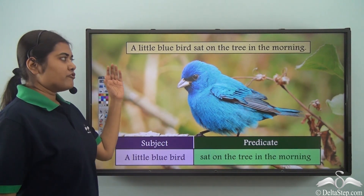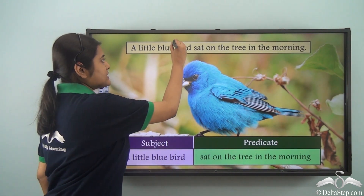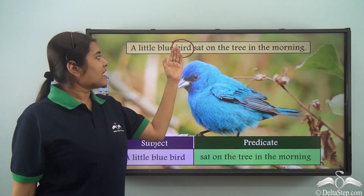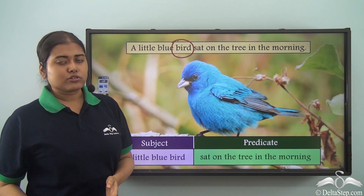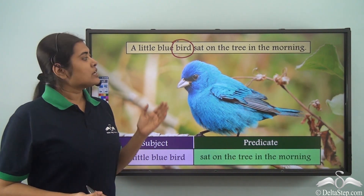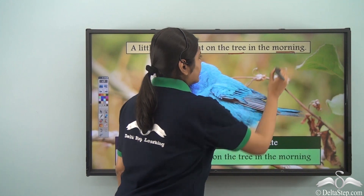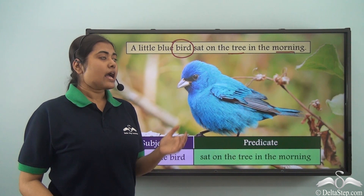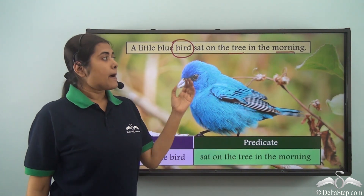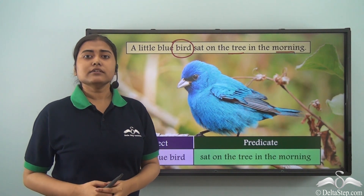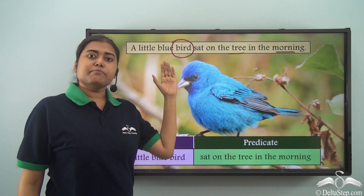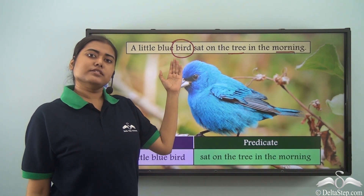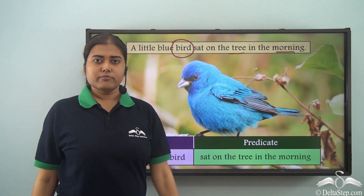Remember: when you find the subject, we not only consider the noun but also the words that modify the noun. Also note that just because 'tree' and 'morning' are nouns, they are not subjects. A subject is always a noun, but not any noun — only the noun that performs the verb is the subject. In this case, the bird is the only subject, not 'tree' or 'morning.'